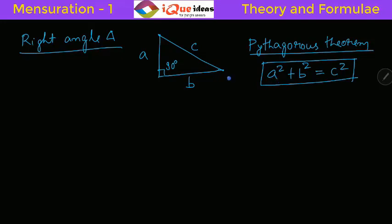For the right angle triangle, the area is equal to half the product of the perpendicular sides A and B, so it is AB divided by 2.